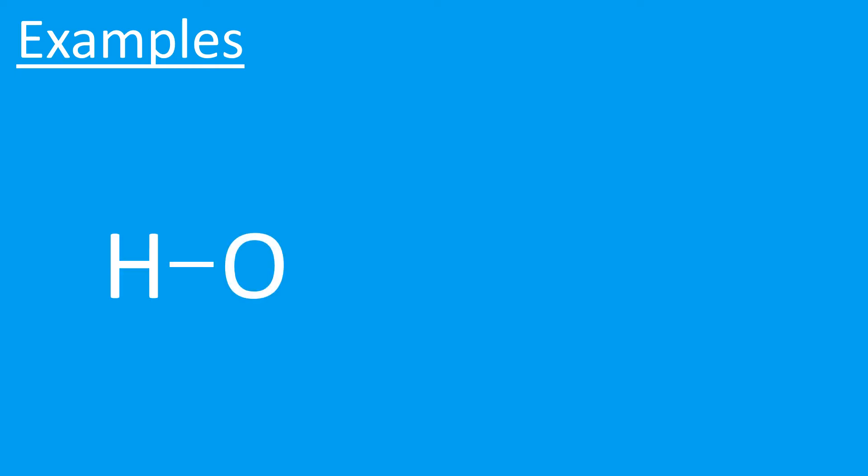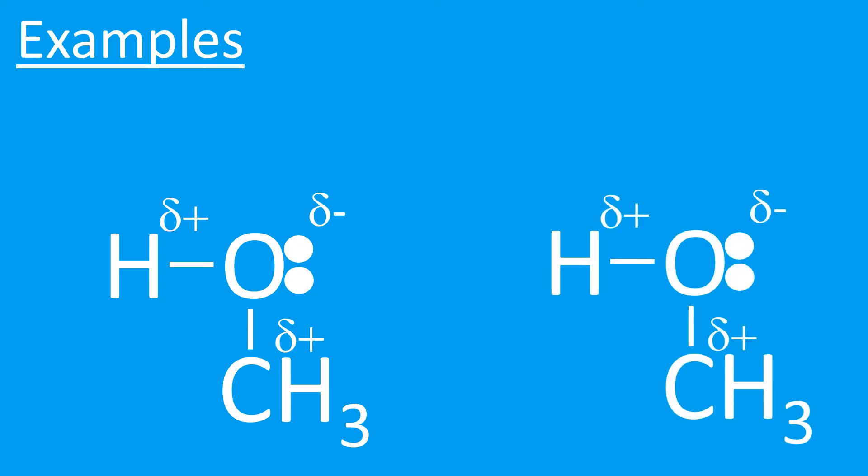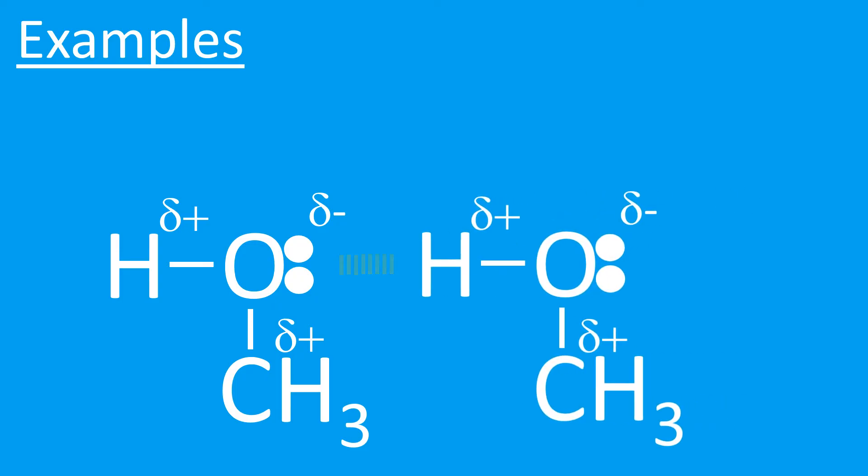Third and final example: this time it's methanol, CH3OH. Exactly as before, the O-H bond is polar, got a slightly negative oxygen and a slightly positive hydrogen. So if we were to draw another methanol molecule, it would be attracted to the other methanol molecule via a hydrogen bond.